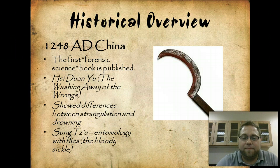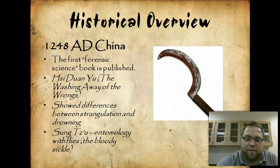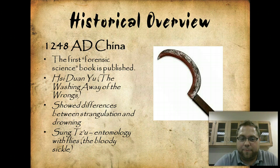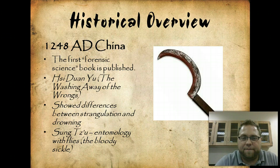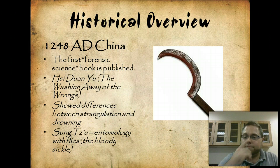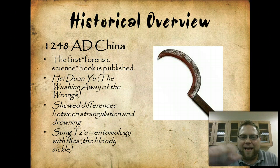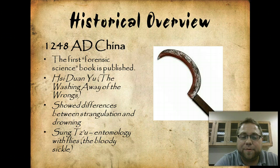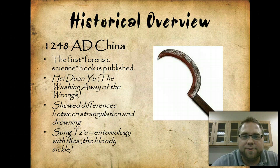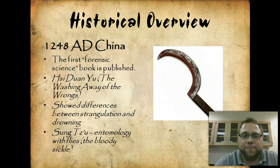There was a murder where somebody was stabbed to death with a sickle — you can see a sickle on the screen. Sun Tzu, basically a medical examiner of the day, gathered everyone in the village and had them take out their knives and sickles and lay them out on the ground. Over time, flies came and collected on the sickle that had been used as the murder weapon because it would have recently had blood on it and the flies were drawn to that. When all the flies landed on that particular sickle, the murderer confessed to his crime — I'm sure he thought it was some sort of wonderful witchcraft and trickery, but honestly it was just good science.